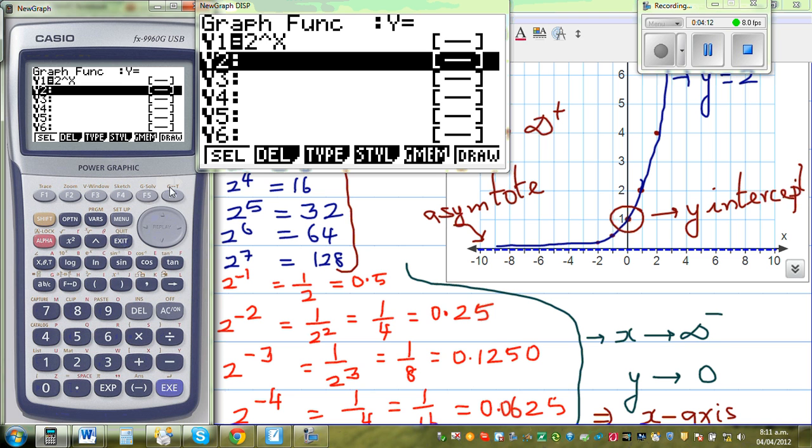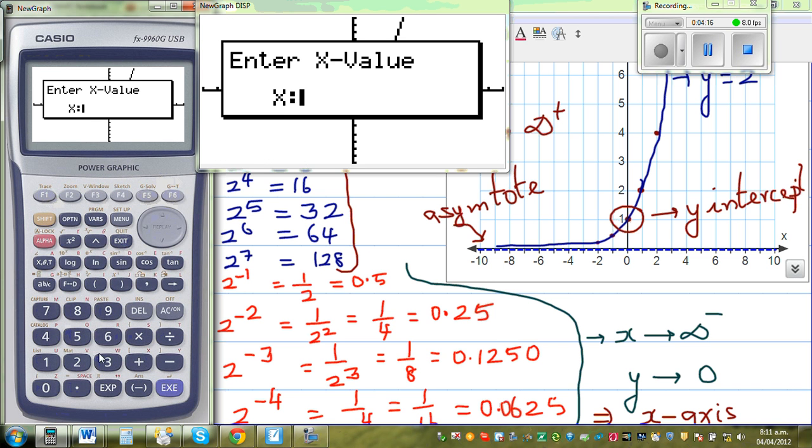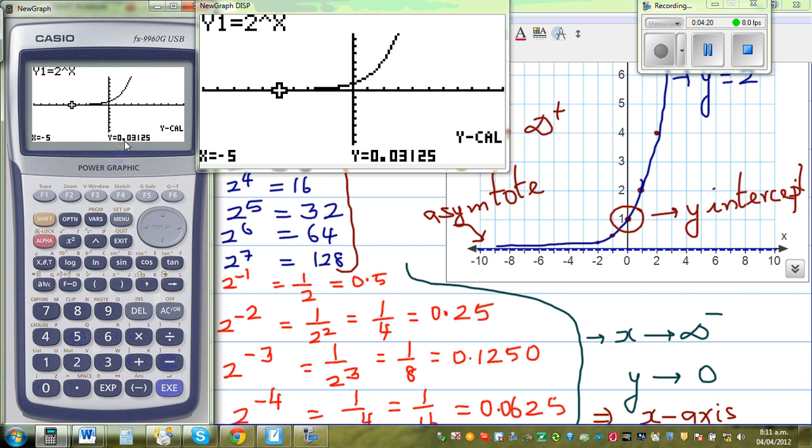So let me draw this again and take ycalc when x is negative five. This is 0.03125. In other words, when x is approaching negative values, your y will be approaching zero. This will never become zero. But this will be approaching zero. Or your x-axis will become the asymptote.